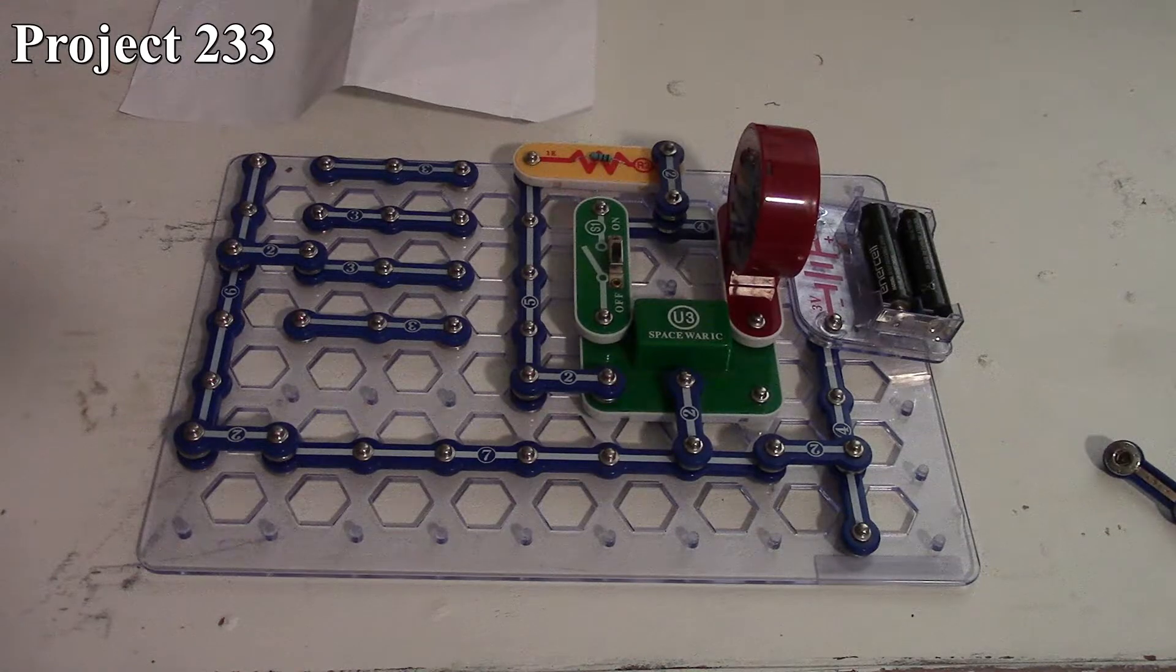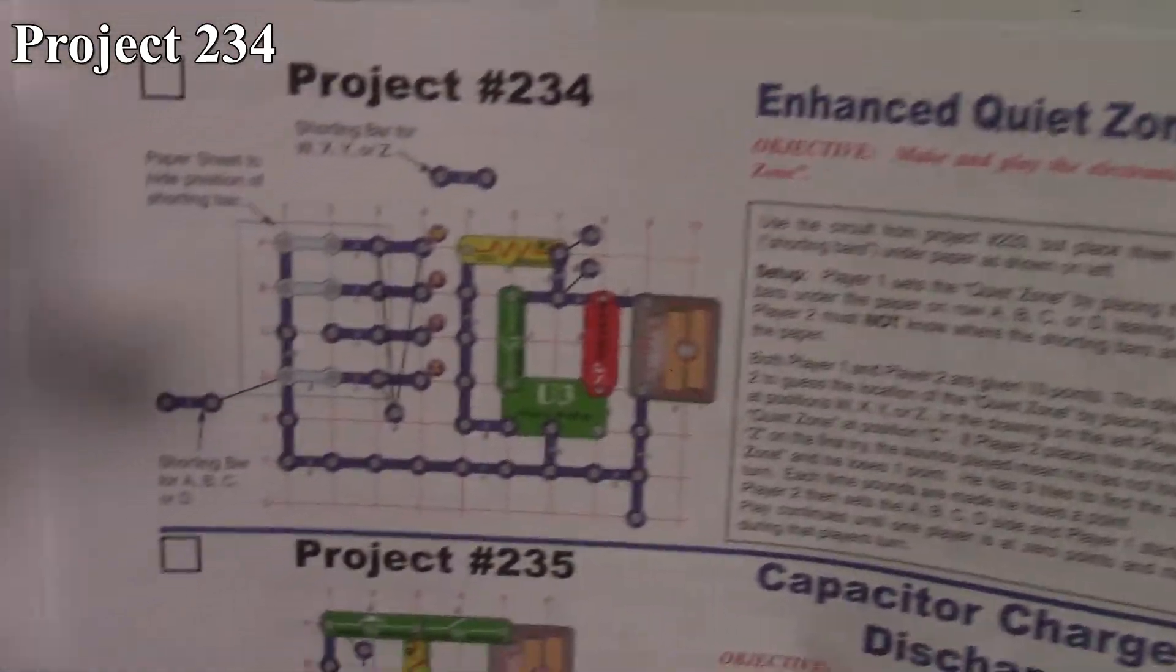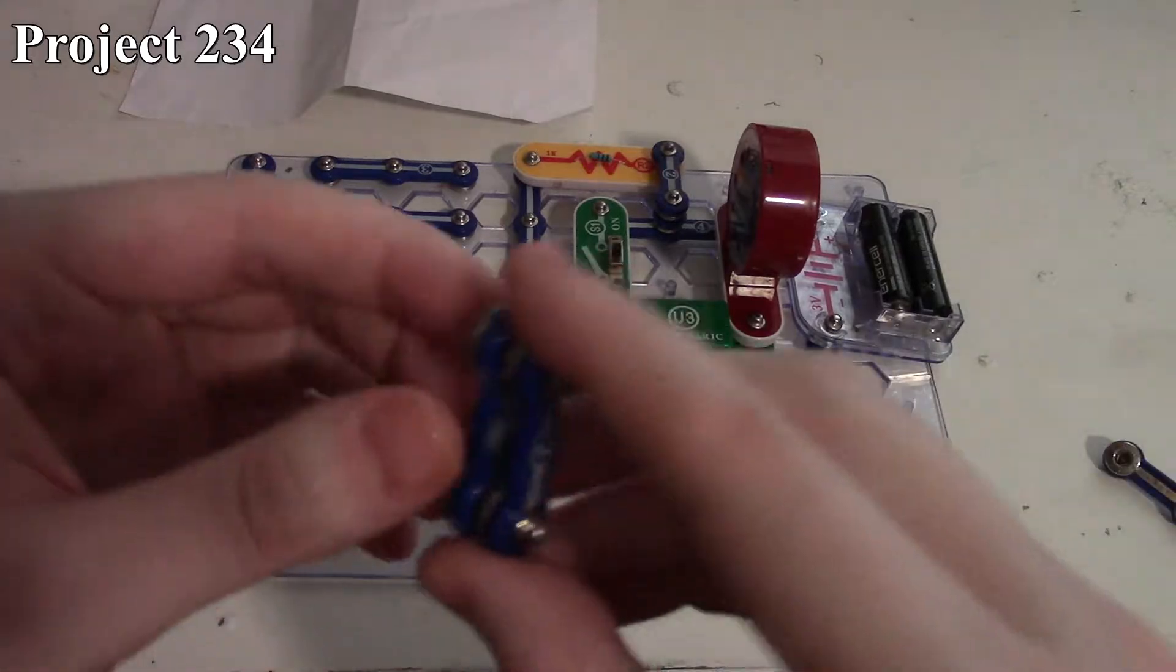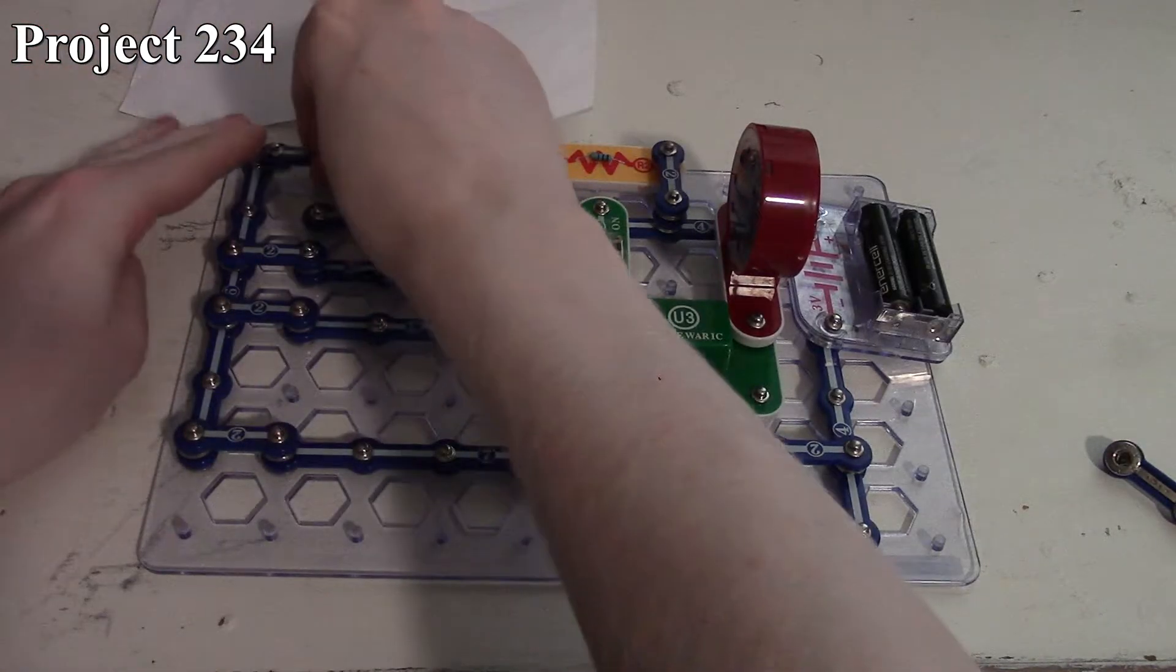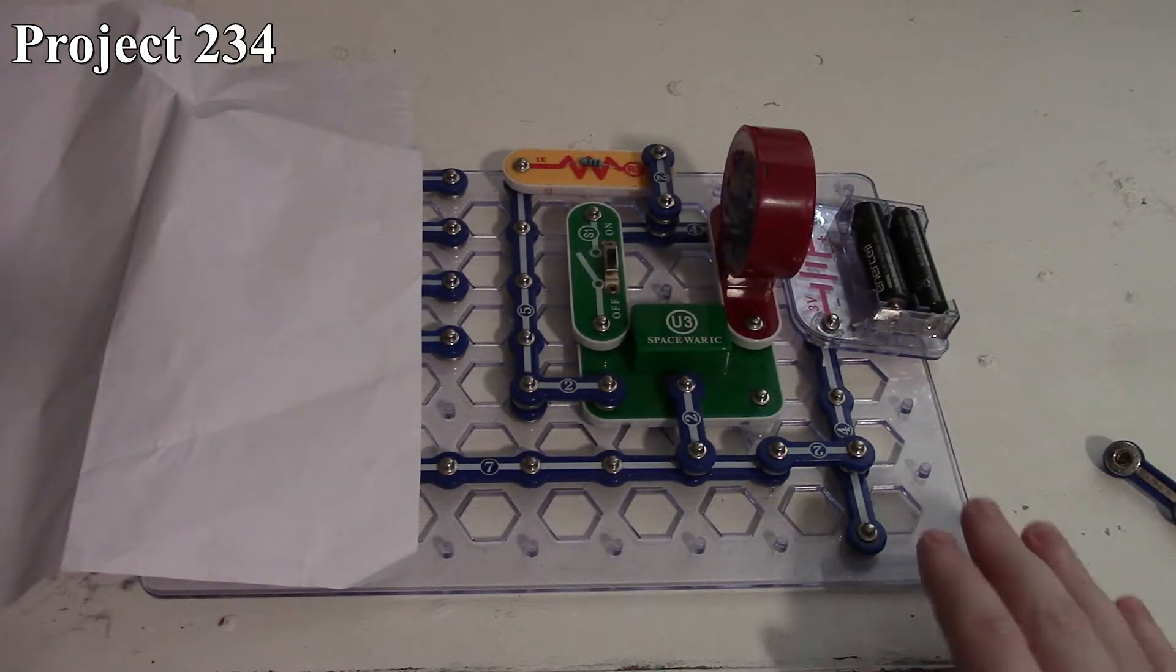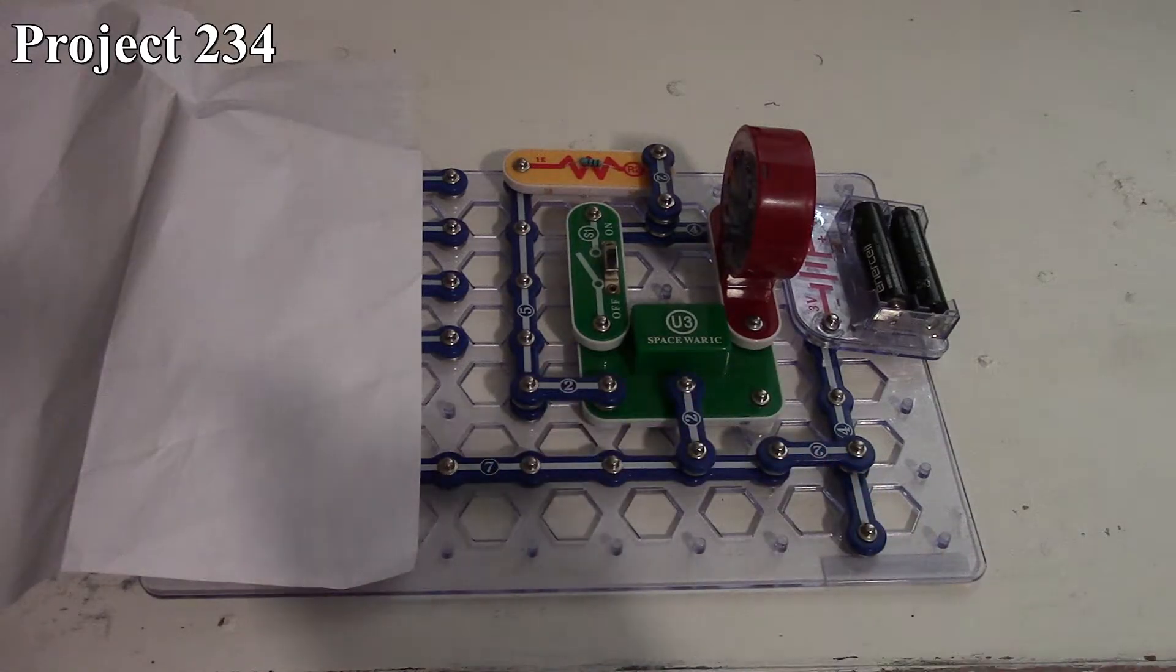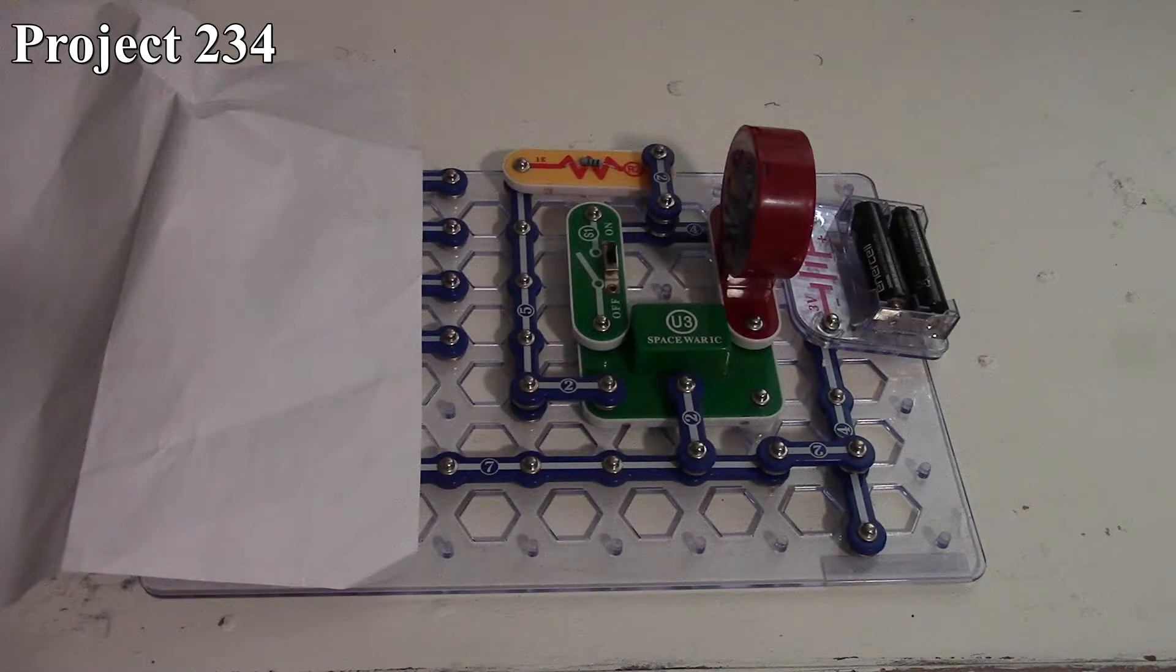That's essentially how project 233 works. Now project 234, the enhanced quiet zone game, is very similar. Instead of just having one snap, the player takes three snaps and places them there like so, then covers it back up again.